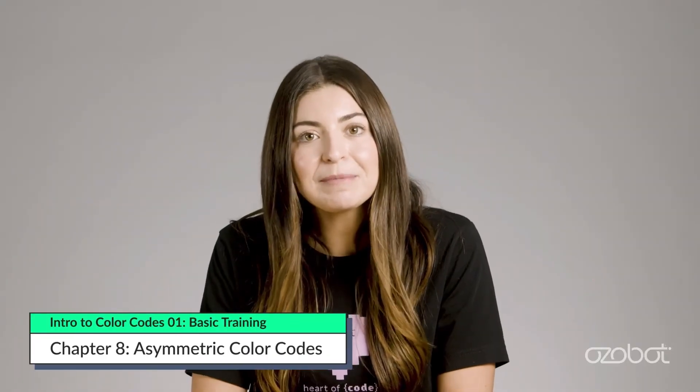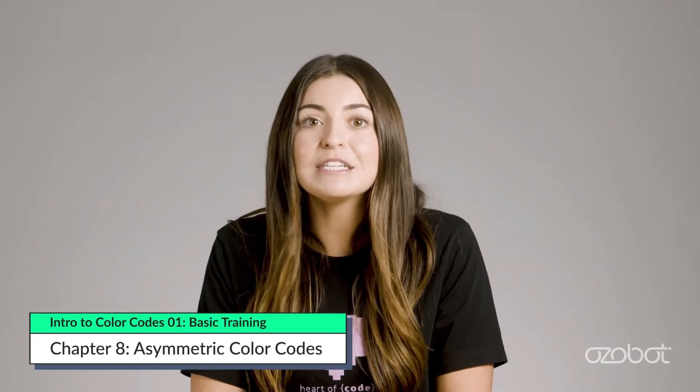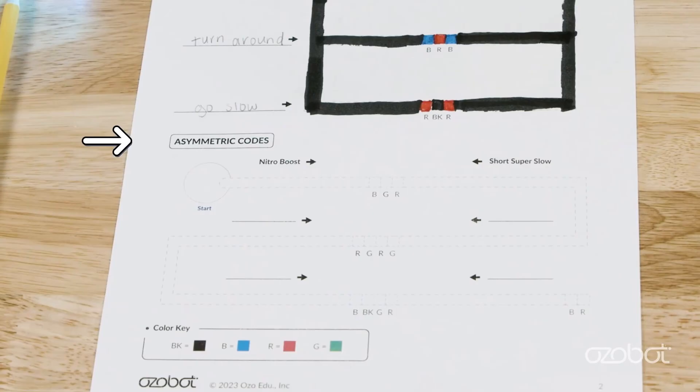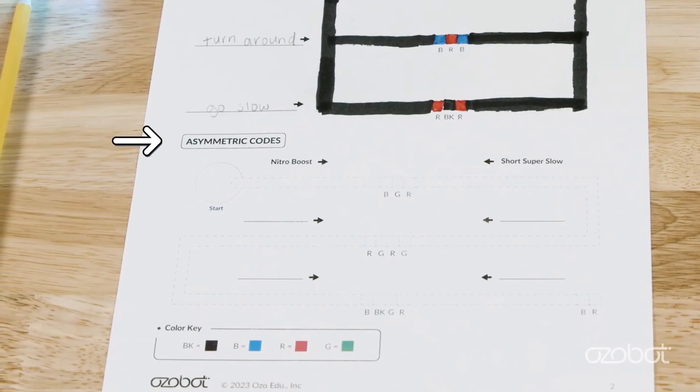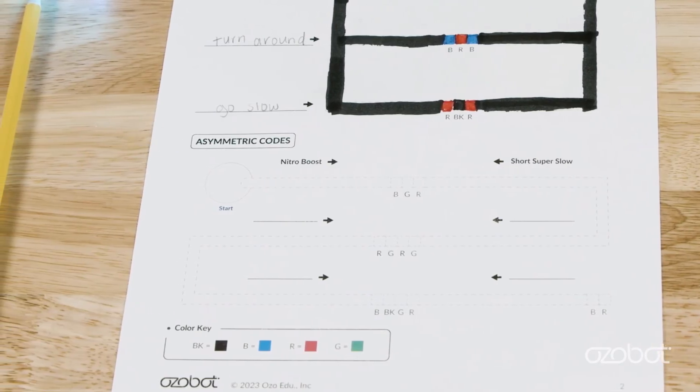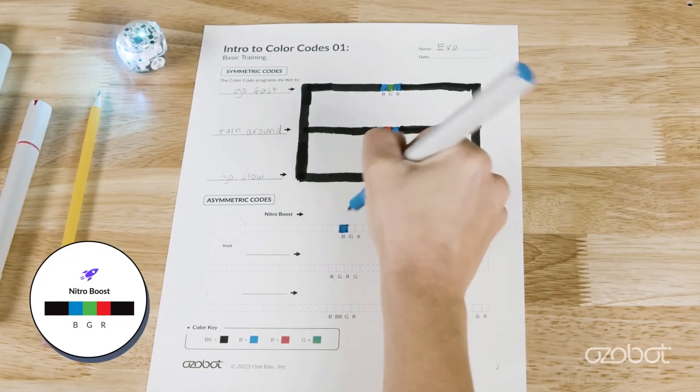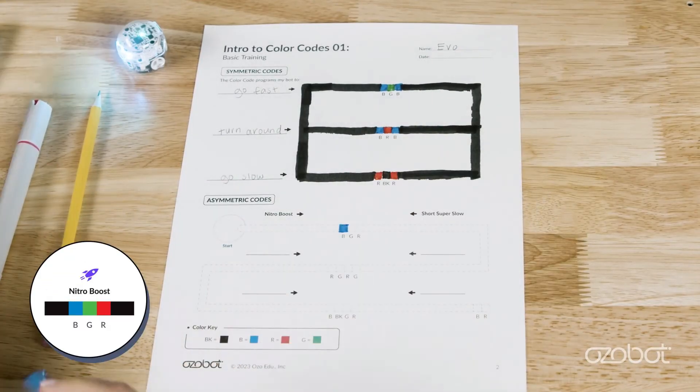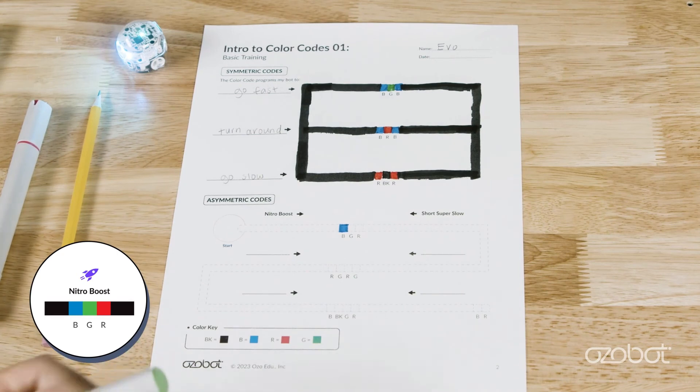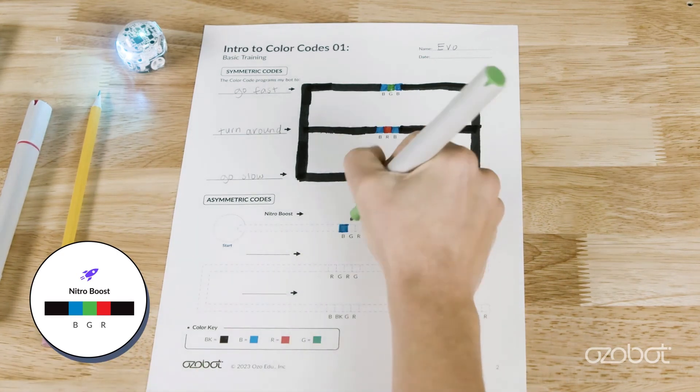Asymmetric color codes program the bot to perform an action depending on the direction the bot is traveling when it reads the code. At the bottom of the page find spaces for three more color codes on a black line. The first color code is called Nitro Boost and it programs your Ozobot to go very fast for three seconds. The code is blue green red. Ozobot sees the blue box first.